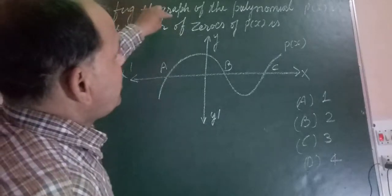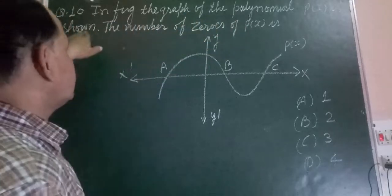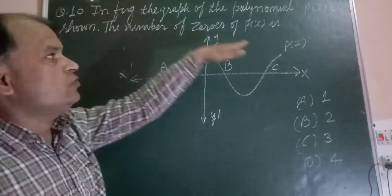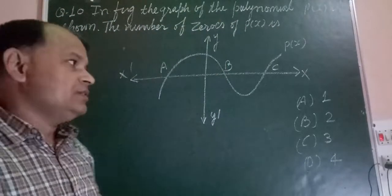In the figure, the graph of the polynomial P(x) is given. The question asks: the number of zeros of P(x) is...